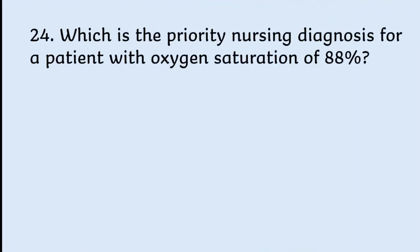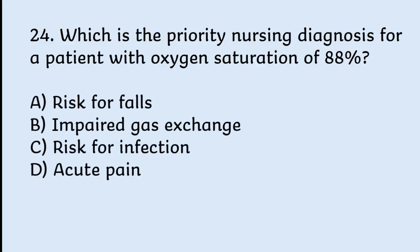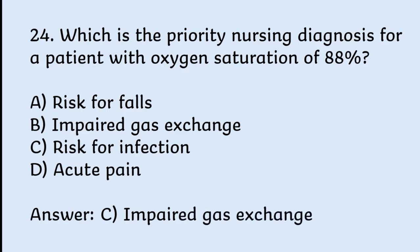Which is the priority nursing diagnosis for a patient with oxygen saturation of 88%? Options: risk for falls, impaired gas exchange, risk for infection, acute pain. Correct answer is impaired gas exchange.